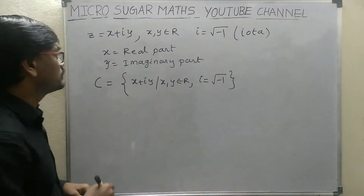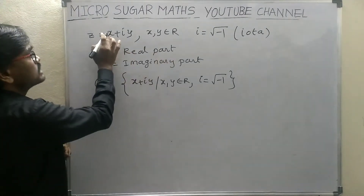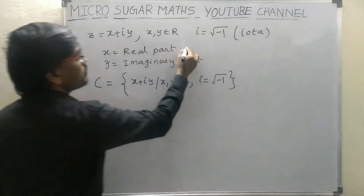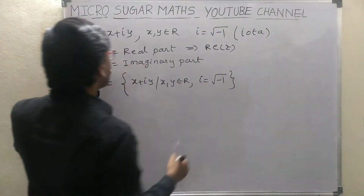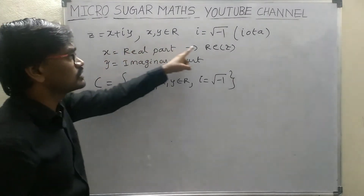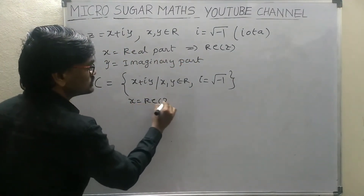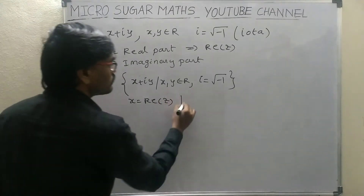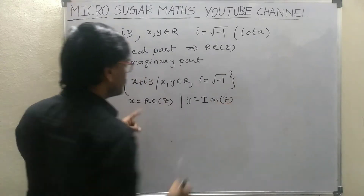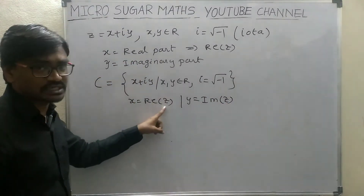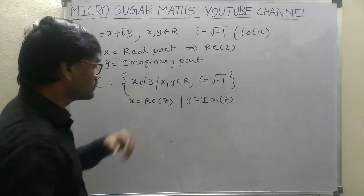Now students, if the real part of Z is denoted by Re(Z), therefore X is equal to the real part of Z. And the imaginary part Y is denoted by Im(Z). Therefore X is equal to the real part of Z and Y notation is the imaginary part of Z.